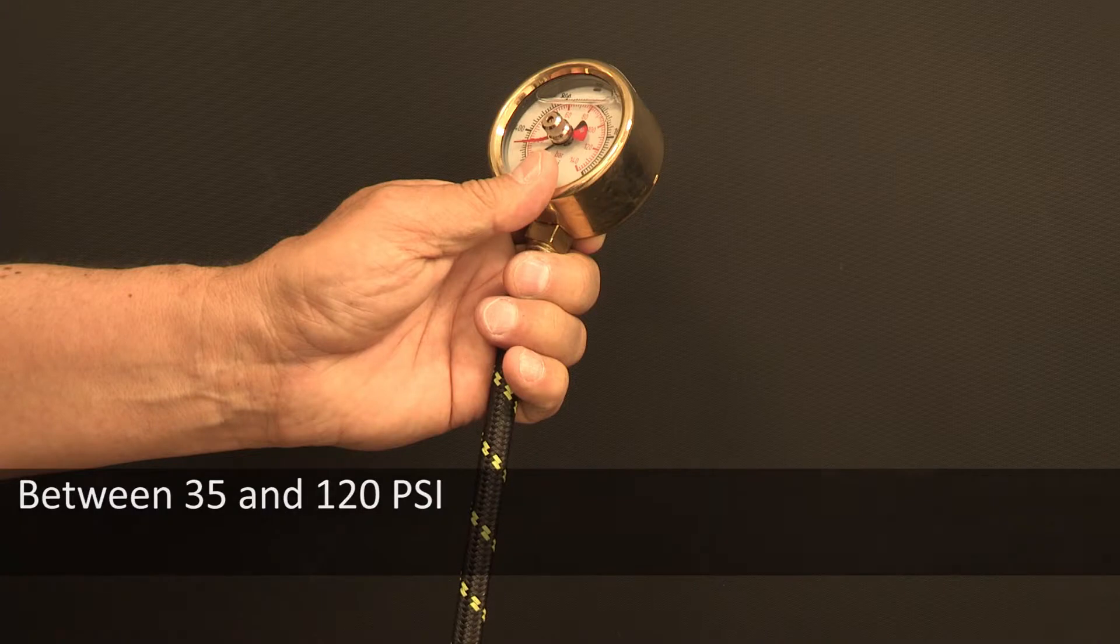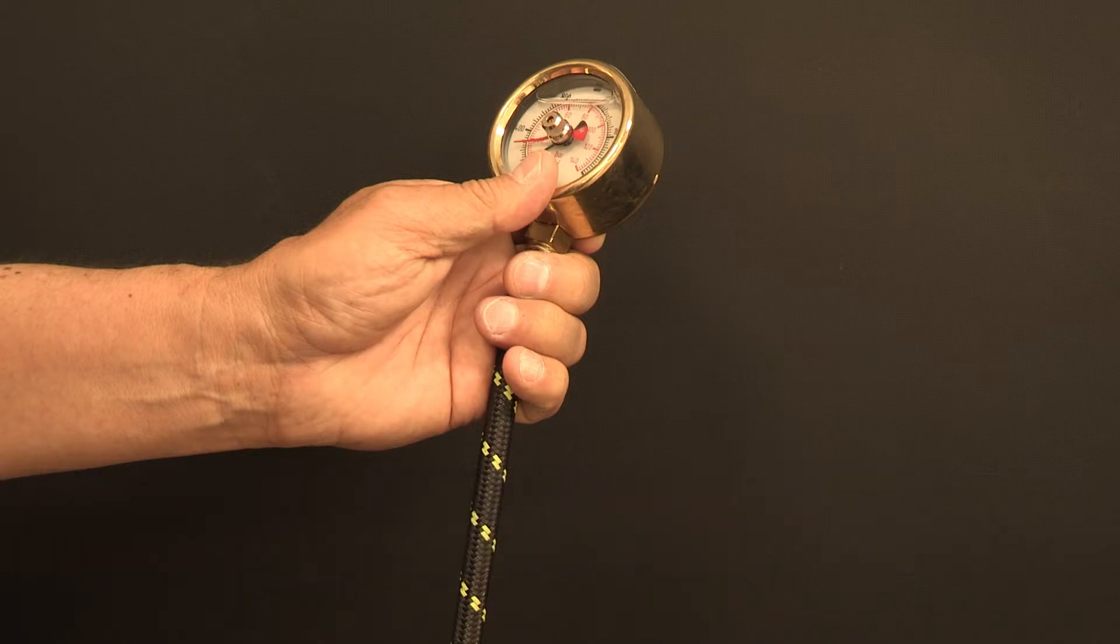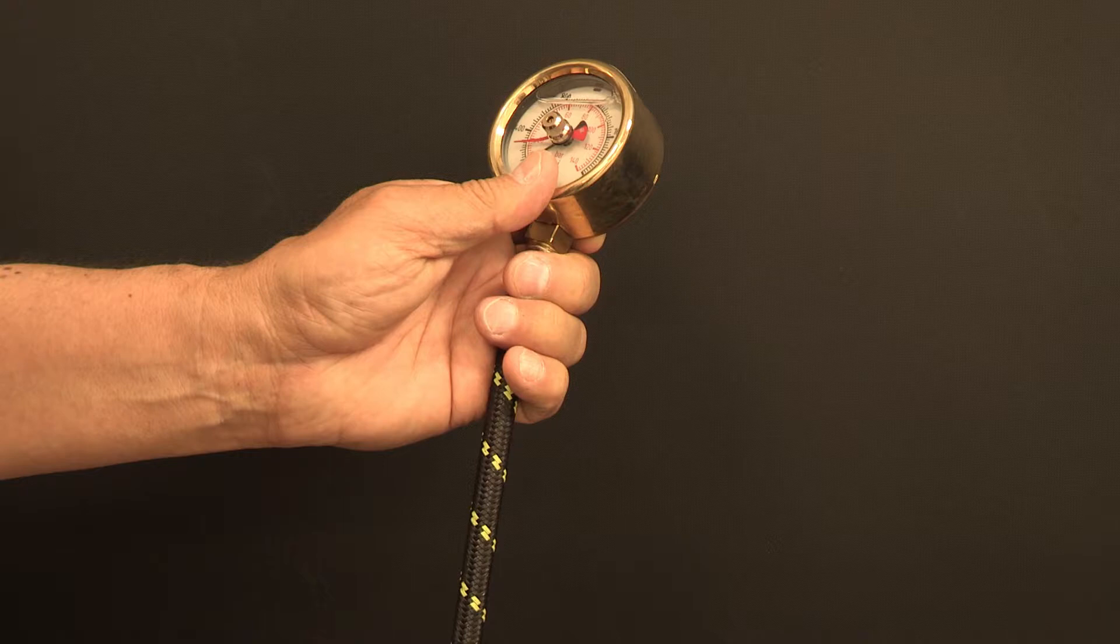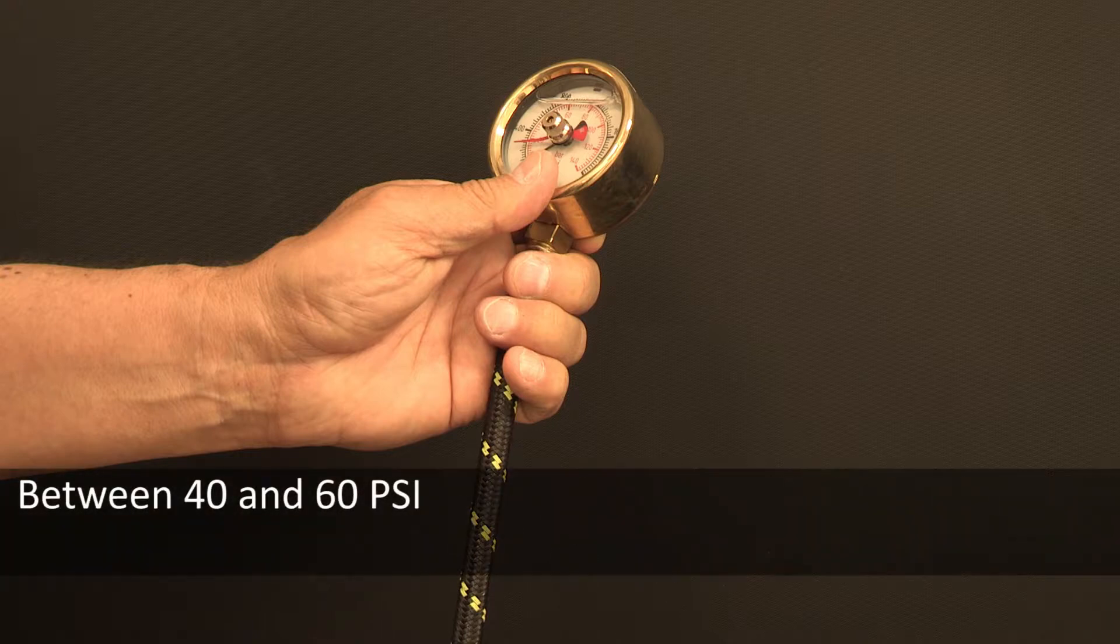If you have a reverse osmosis water filtration system, these requirements don't change. However, the water pressure to reverse osmosis systems needs to be a minimum of 40 to 60 PSI.